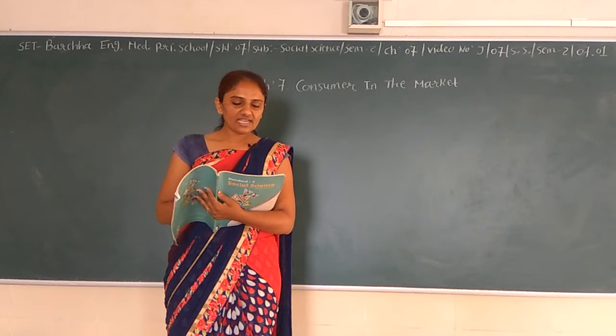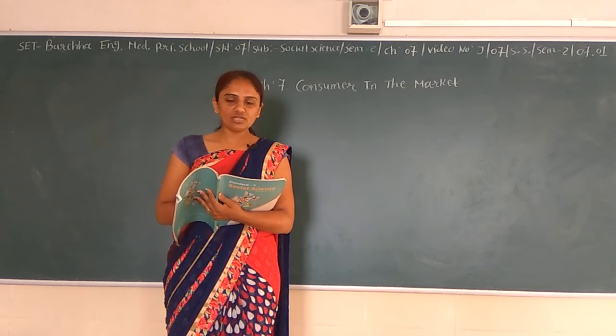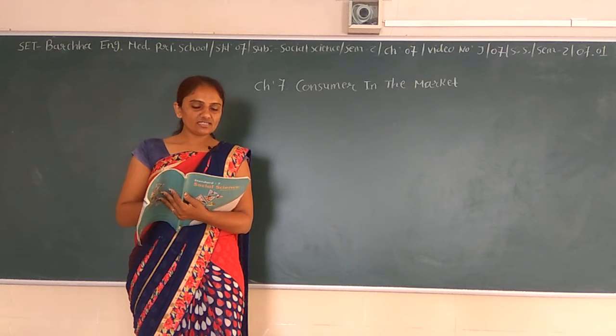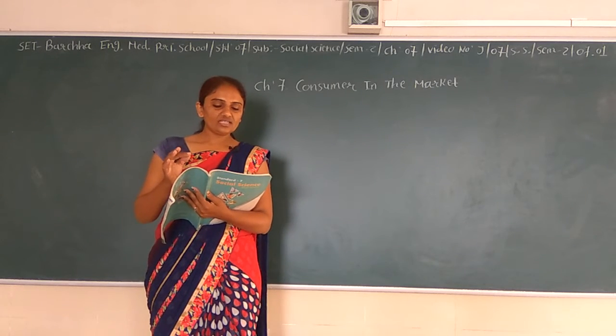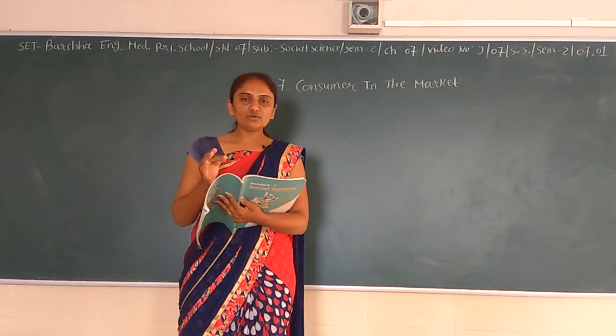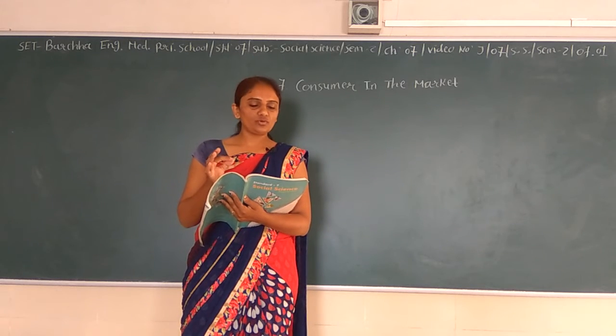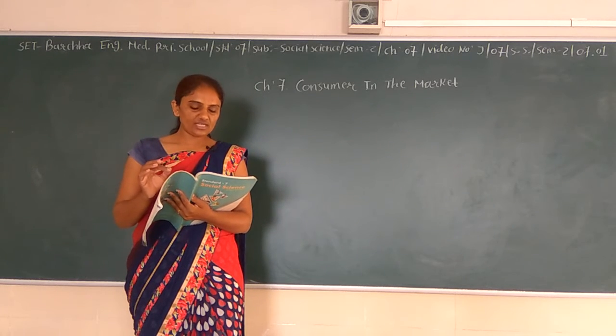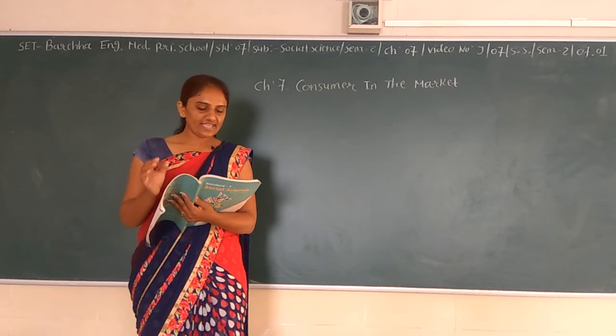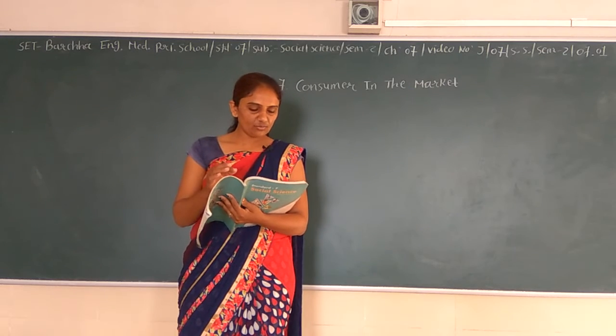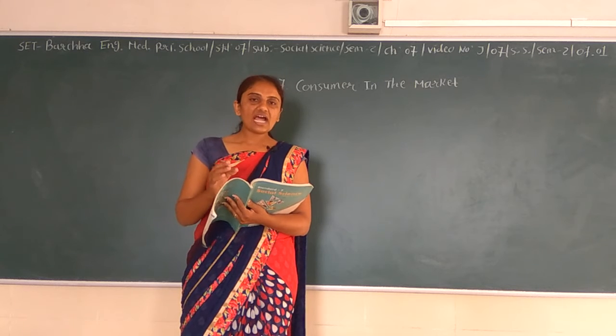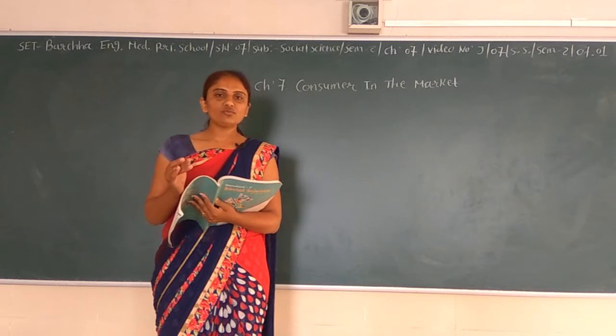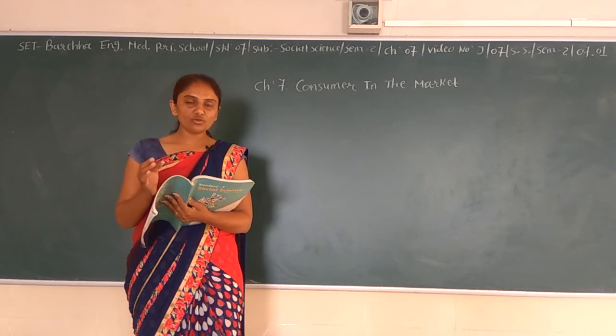As a consumer, we want to get good quality products and don't suffer a loss. For this, the government has sanctioned particular symbols or marks of different products tested by them. In figure 7.3, there are various symbols. For example, AGMARK symbol used for agricultural products, ISI symbol used for household products, and HALLMARK symbol used for jewelry products.